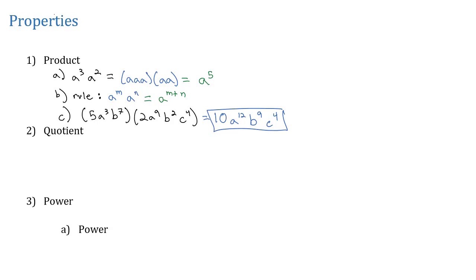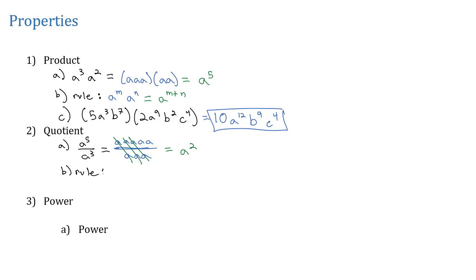Our second property is the quotient rule. To set up the quotient rule, let's think about a to the fifth divided by a cubed. That means there's five a's on top of three a's. If we reduce those a's, we're going to be left with a squared on top. If I have a to some exponent divided by a to some other exponent, we can subtract those exponents to get our answer.